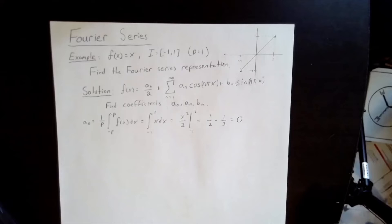By calculating this integral, we see that the coefficient a_0 is equal to 0. This is expected, since it's clear that the area under the linear function from negative 1 to 1 is 0.